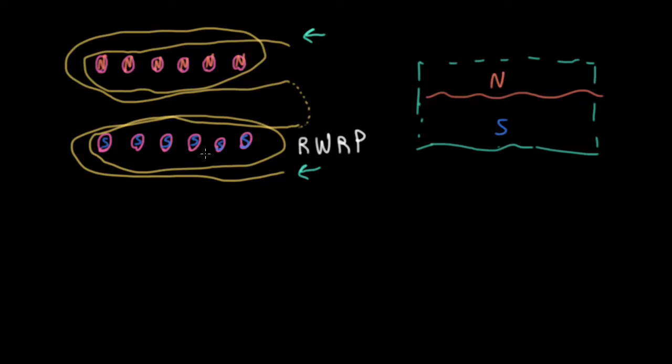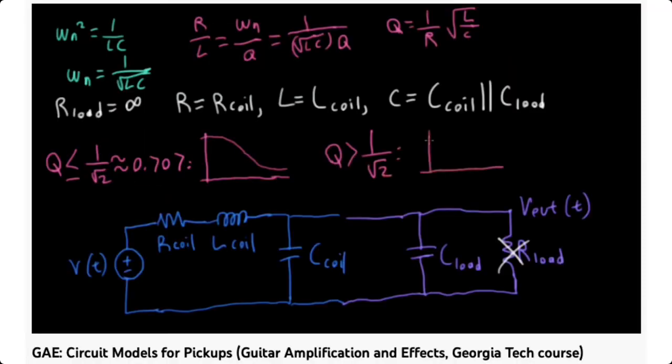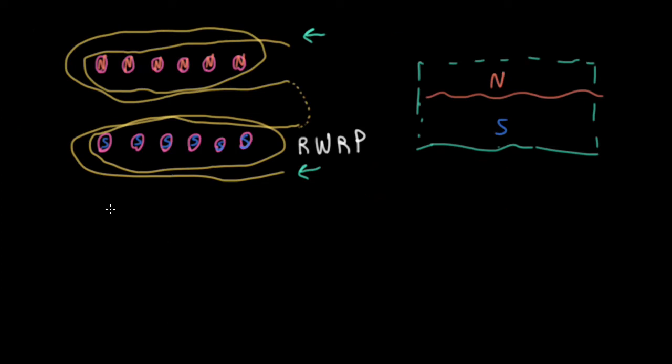Now, as a result of combining the two pickups, humbuckers are usually hotter than single coil pickups just because you have more total windings, usually. And they also have higher resistance because you have more windings. And you also have higher inductance, again, because you have more windings. And as we looked at last time, that will have a lot of effect on your guitar tone by shifting the resonance bump downward.